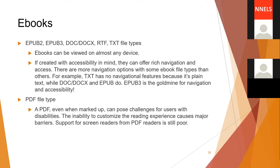EPUB3 is the gold standard for navigation and accessibility, allowing you to jump to different sections, links, and elements of a book, including navigating through a table of contents. PDFs, even when marked up, can pose challenges for users with disabilities. The inability to customize the reading experience causes major barriers for some readers, and support for screen readers from PDF readers is still poor. We recommend avoiding PDFs, or if you must use them, also creating the same document in a more accessible format, like a Word document or a web page.